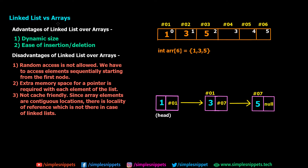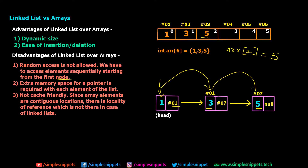Of course linked lists have their own disadvantages. First, random access is not allowed — we have to access elements sequentially starting from the first node. In an array, to access the third value you can simply say ARR[2] and get 5. But to find value 5 in a linked list, you have to start from node 1, check the value, jump to node 2 using the link, check again, then jump to the last node and check. You have to perform a lot of traversal, which can become inefficient. Arrays have random access; linked lists do not.